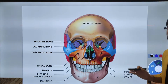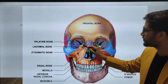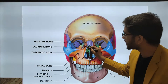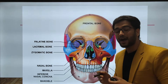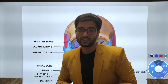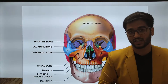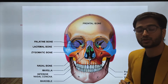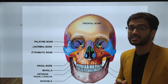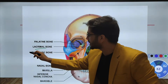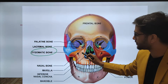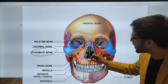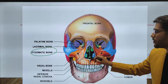Looking at the facial bone positions: the palatine bone is found behind the maxilla. The lacrimal bone is part of the eye cavity or optic cavity, and its function is to provide the pathway for the lacrimal duct, which is the tear duct. The zygomaticus bone, the maxillary bone, the mandible, and the inferior nasal concha are also situated here, along with the vomer.